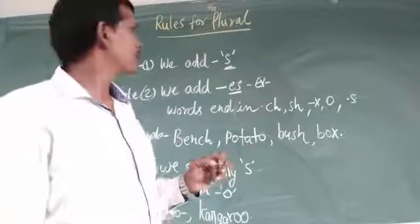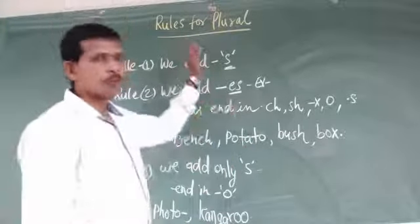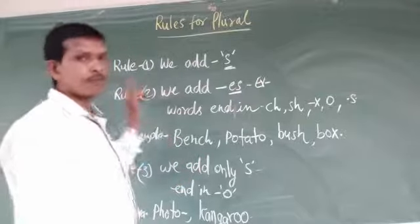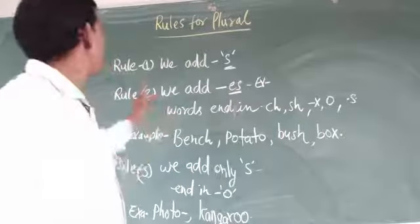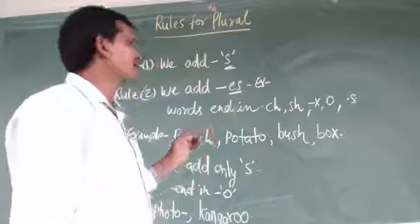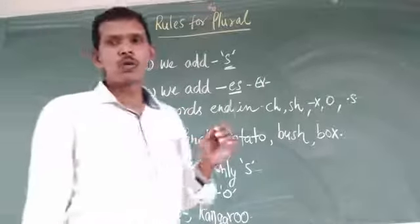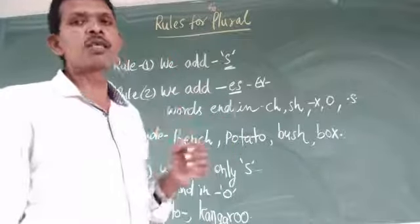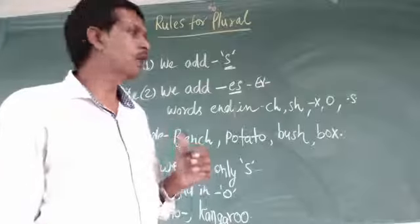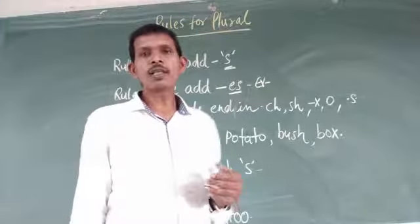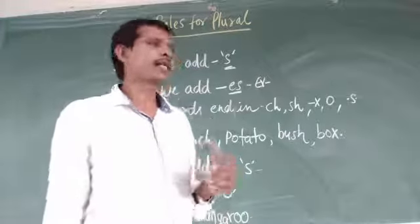Rules for plural. Rule 1: we add 's'. Generally, we add 's' to words which end with consonant letters. We can see examples here.